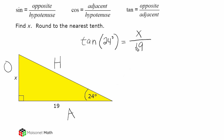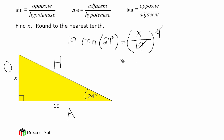Whenever you have the denominator's length known, we're going to send it to the other side — multiply 19 by the tangent of 24 degrees. Basically, we just isolated the variable x. Because we're dividing by 19, we multiply by 19 on both sides, which cancels out 19, leaving us with just x. So 19 times the tangent of 24 degrees is going to give us the length of x.